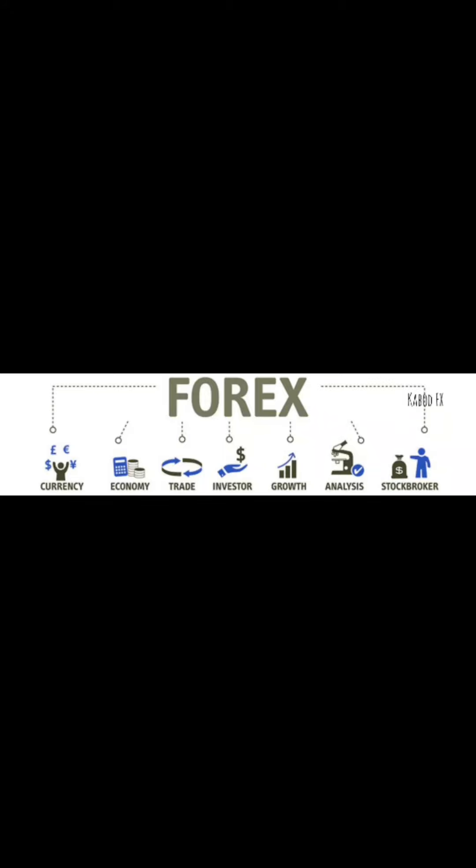Surrounding forex, you find currency pairs, and you talk about economies. One of the major things you must understand when it comes to forex is that you are dealing with economies of nations. If you are trading the US Dollar, you have to be observant of what is happening in the US to know what is happening to their currency. At the same time, for the Great Britain Pound, you must know what is happening in the UK to know whether the currency will appreciate or not. There are many factors that affect the appreciation or depreciation of a currency.